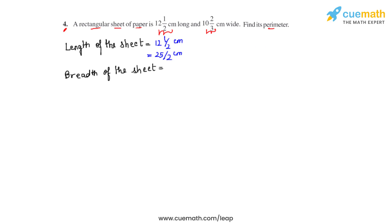So the next thing that we have to do is to find the breadth of the sheet or the width of the sheet which was given to us as 10⅔ cm. So to convert this into an improper fraction, we'll multiply 3 with 10 that is 30 and add it to 2 which is 32. So we get it as 32 over 3 cm.